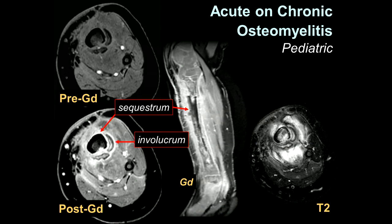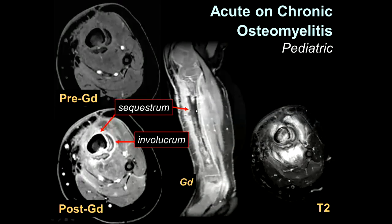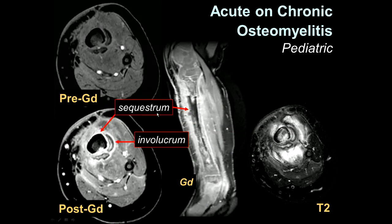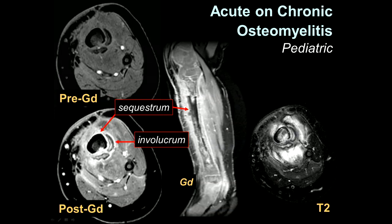If you allow the infection to progress longer, which fortunately we don't see much anymore, you get the classic textbook pattern of chronic osteomyelitis. The bone becomes devitalized with no blood flow left, leading to lack of enhancement on post-contrast images. This devitalized bone is called a sequestrum. The new bone formation around the sequestrum is called the involucrum, and this is vascularized new bone formation. You'll see the inflammation around the sequestrum, which eventually leads to sinus tract formation extending to the skin as a cloaca.